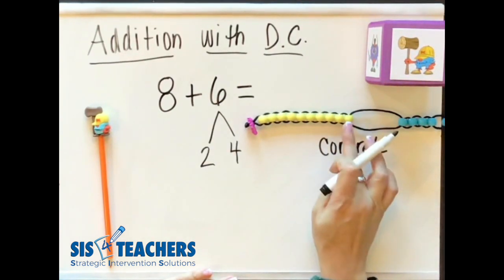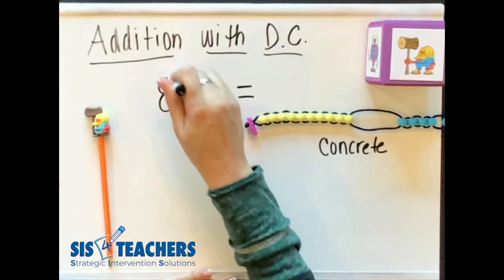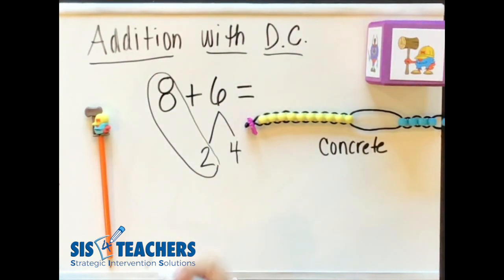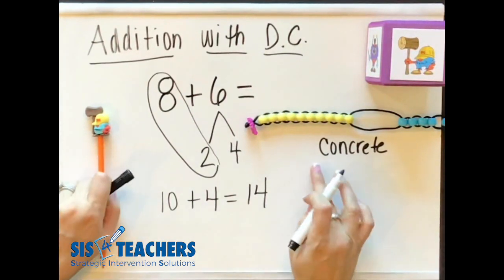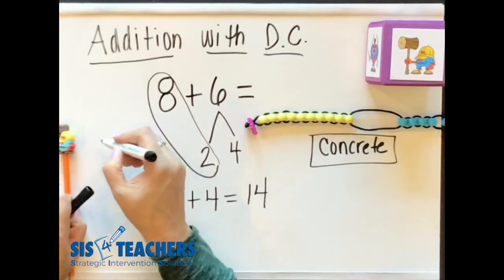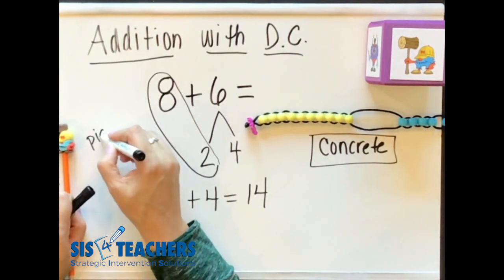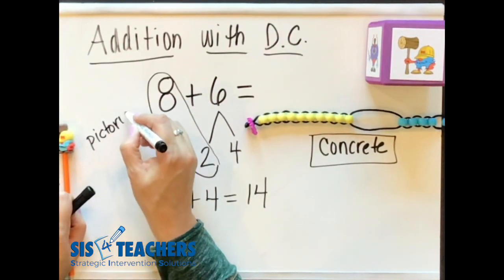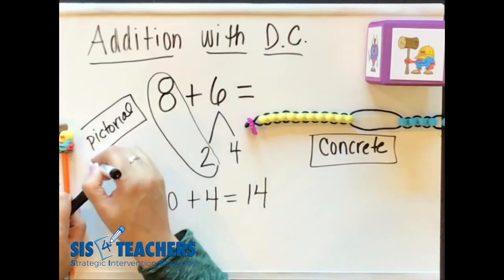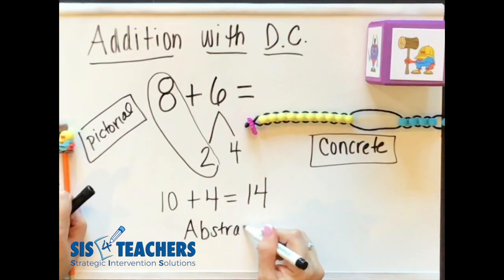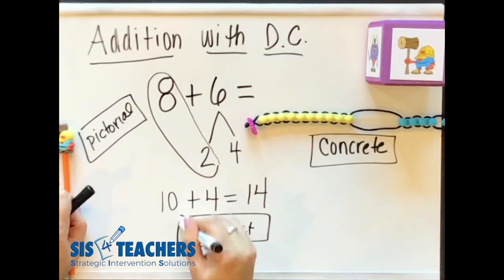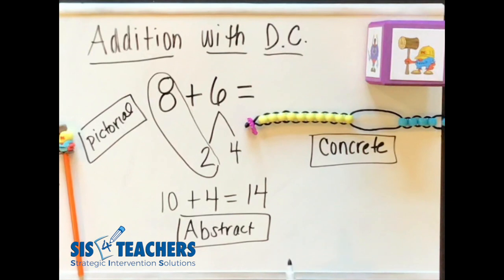When I moved those 2 beads over to the 8, I ended up composing or putting those together to make that nice friendly 10. I took the 10 and I added it to the 4 beads that I had left over to get the 14. So you have this as your concrete model. This over here could be representative of our pictorial model. And then our new problem that we created is going to be our abstract. So you can see our CPA as we put it together.